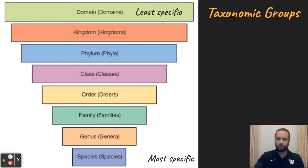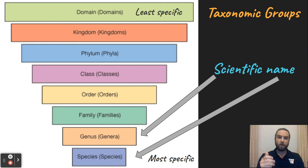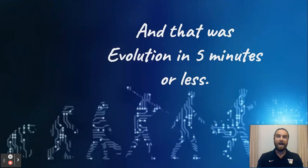Where do scientific names come from — the binomial nomenclature? Homo sapiens is our genus and species. That's how you form the scientific name: genus and species. And that was Evolution in five minutes or less, I hope.